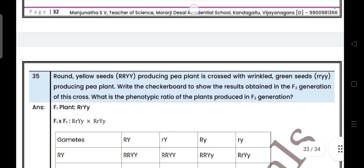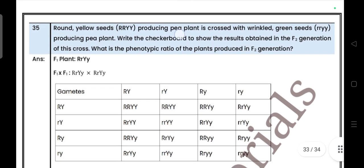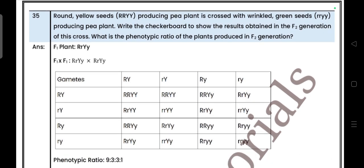Round yellow seeds (RRYY) producing P plant is crossed with wrinkled green seeds (rryy) producing P plant. Write the checkerboard to show the results obtained in F2 generation of this cross. What is the phenotypic ratio of the plants produced in the F2 generation?